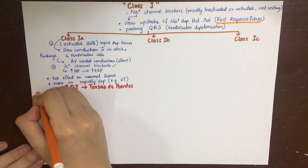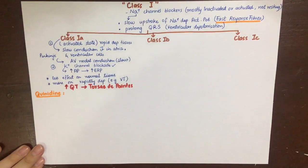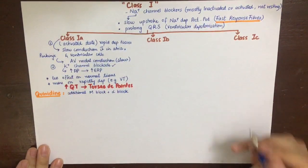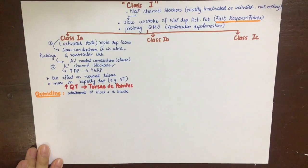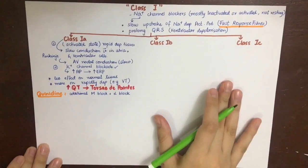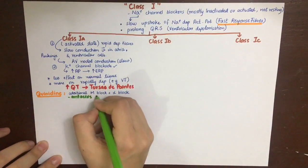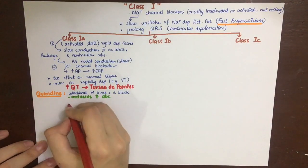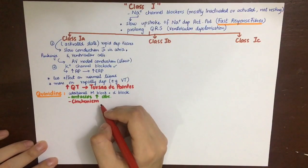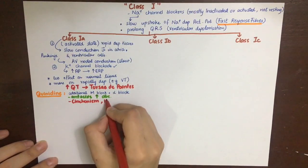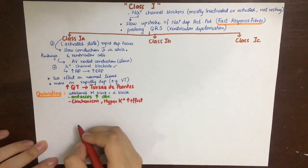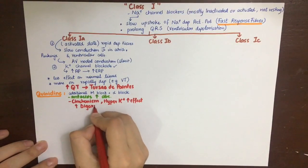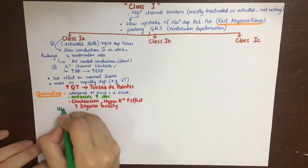The class 1a drugs include quinidine, procainamide, and disopyramide. Quinidine additionally has muscarinic blocking and alpha-blocking properties, which contribute to numerous side effects. Antacids increase the absorption of quinidine because it is a weak base. Side effects include cinchonism, consisting of GI distress, tinnitus, ocular dysfunction, and CNS excitation. Hyperkalemia enhances quinidine's effects. Quinidine also increases digoxin toxicity by displacing digoxin from tissue binding sites. Quinidine is mainly used in atrial fibrillation.